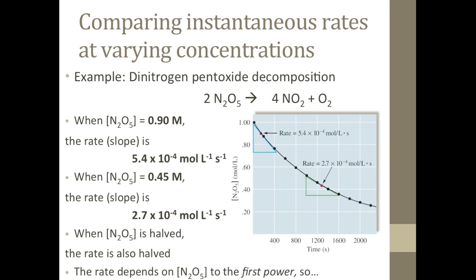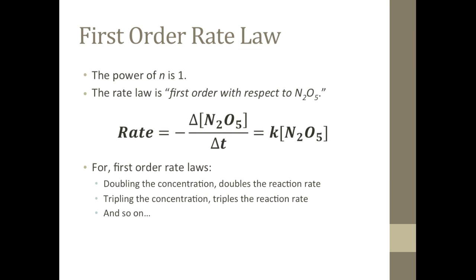That means that the rate depends on the concentration of dinitrogen pentoxide to the first power. The rate law for this reaction is first order with respect to dinitrogen pentoxide. We can write the rate law as the rate of disappearance of dinitrogen pentoxide equals the rate constant k times the molar concentration of dinitrogen pentoxide to the first power.